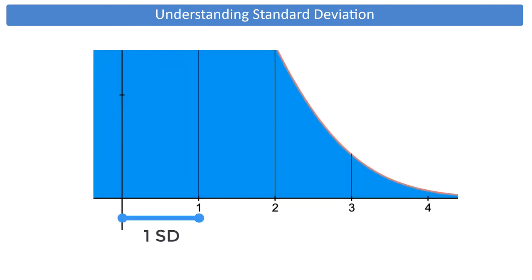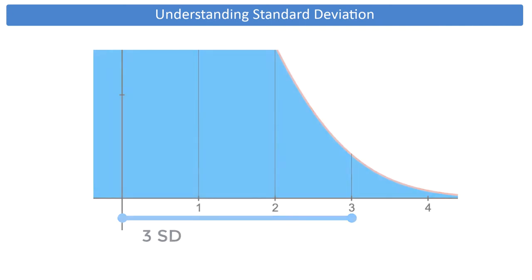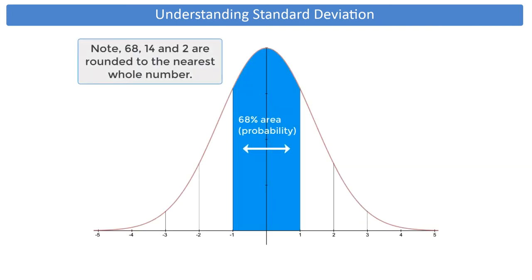The standard deviation acts as a sort of measuring stick, whereby you can locate important points along the bottom axis. One standard deviation from the mean on both sides will capture approximately 68% of the total area under the curve.